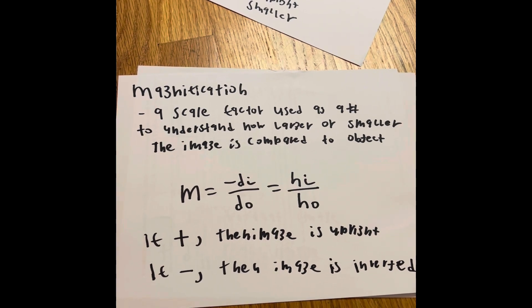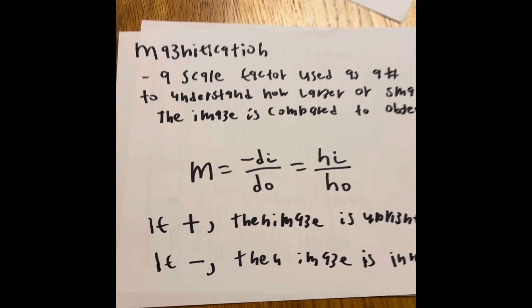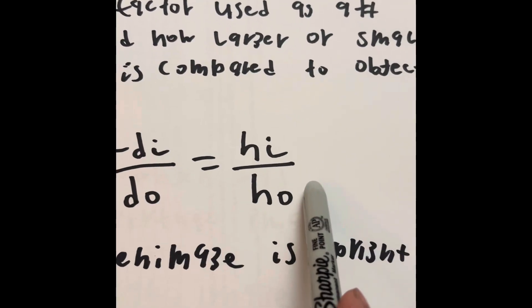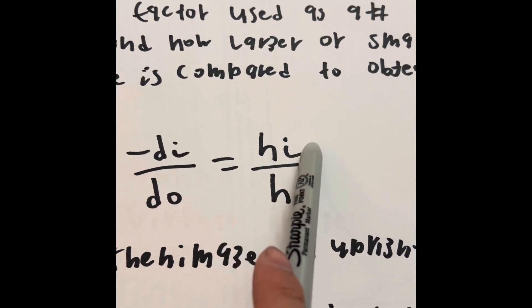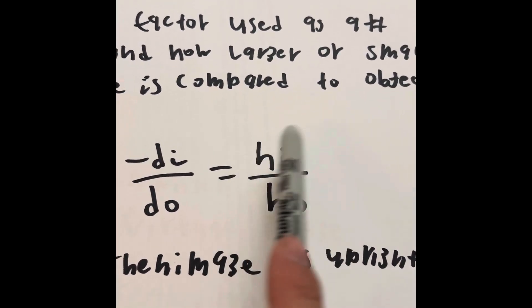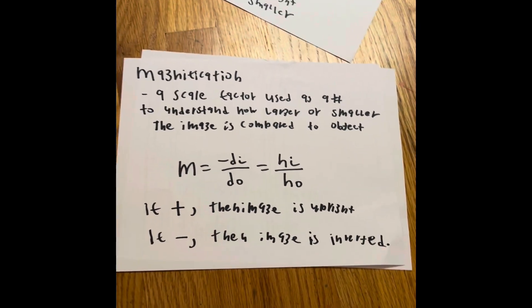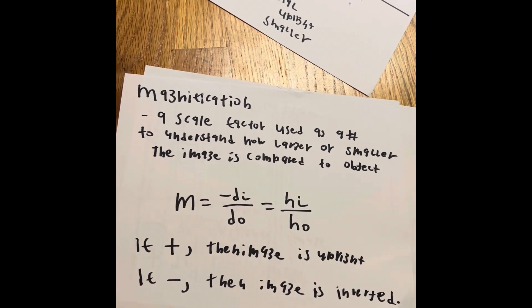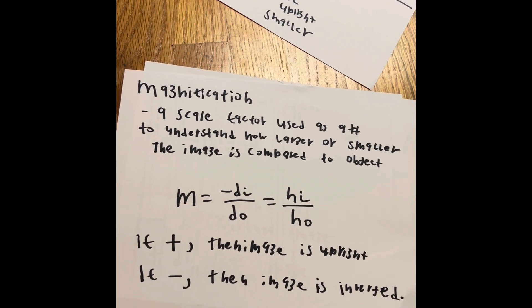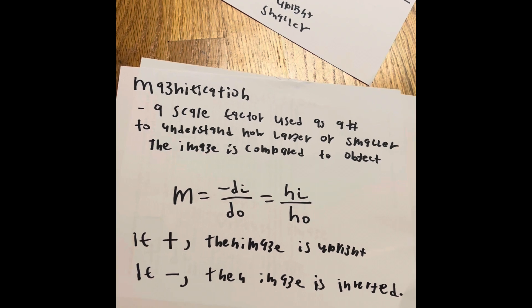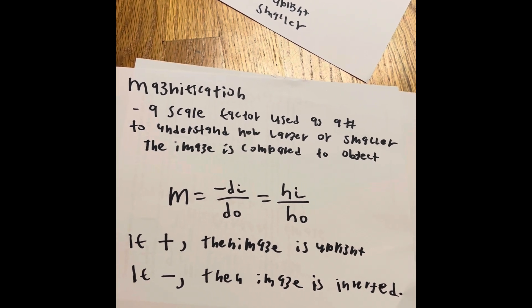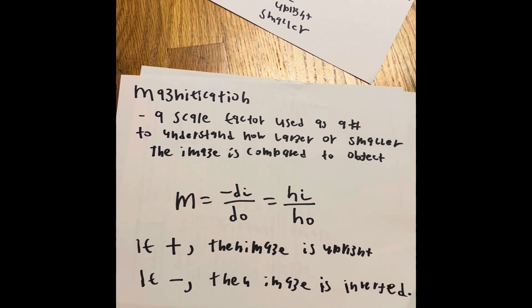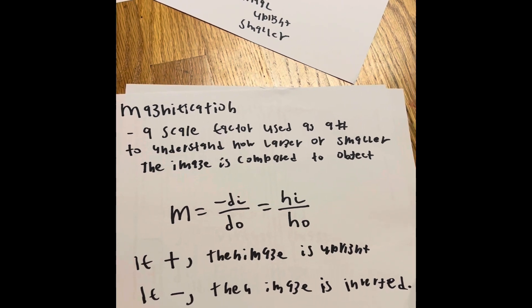The formula is two things. The magnification equals, if you're calculating with distance, you use this one: a negative di divided by do. And if you're using it by height, you do height of the image divided by height of the object. If you get a positive number, that means the image is upright. If you get a negative number, then the image is inverted, meaning it's on the opposite side. But there's still more answers to it. What about how large or small the object is?